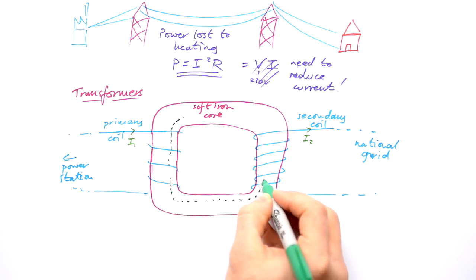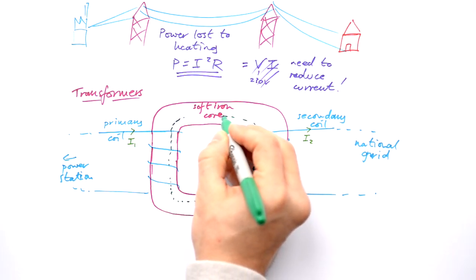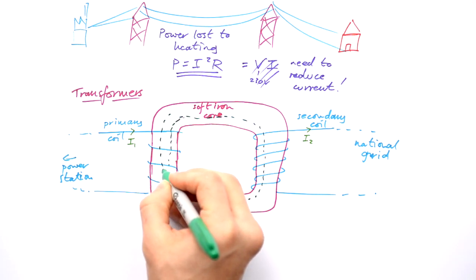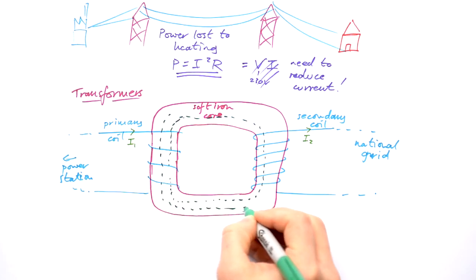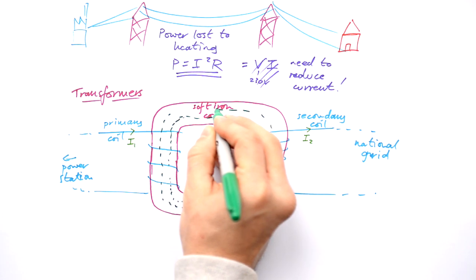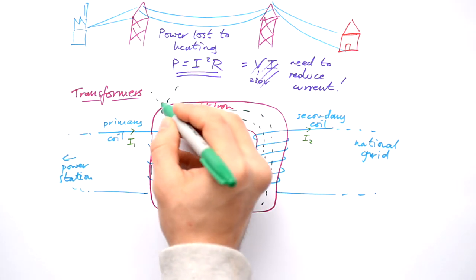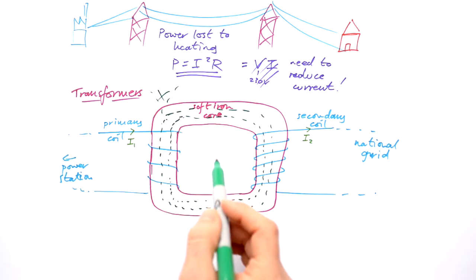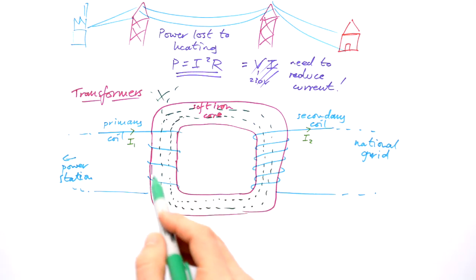Now, what the soft iron core does is it actually acts as a sort of conduit for the magnetic flux. Otherwise, the flux lines would just go out like that. But that doesn't happen. The soft iron core guides the magnetic field and it guides it through this secondary coil here.